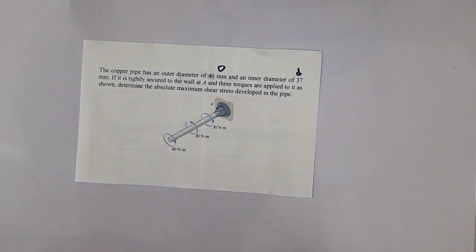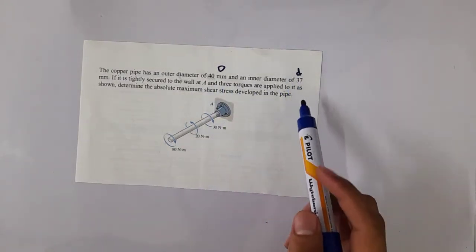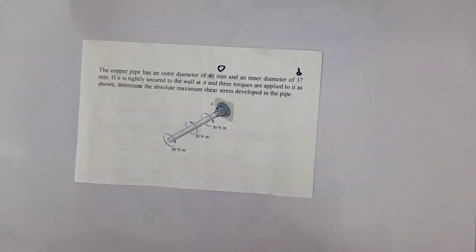This is another example of torsional shearing stress. We have a copper pipe with an outer diameter of 40 mm and inner diameter. We've designated the outer as the larger D, the uppercase D, and then the smaller d for the inner diameter.